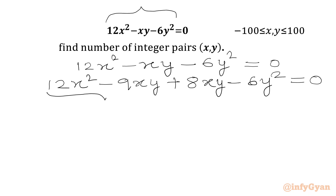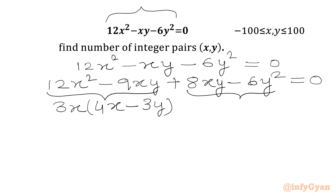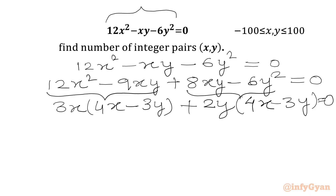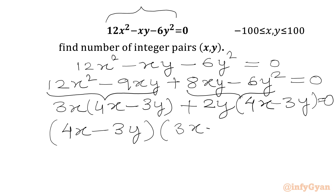Now from the first two terms we can take 3x common, giving us the bracket 4x minus 3y. Then from the next two terms we take 2y common, giving us the bracket 4x minus 3y equals 0. Now we take 4x minus 3y common, so we write: (4x minus 3y)(3x plus 2y) equals 0.